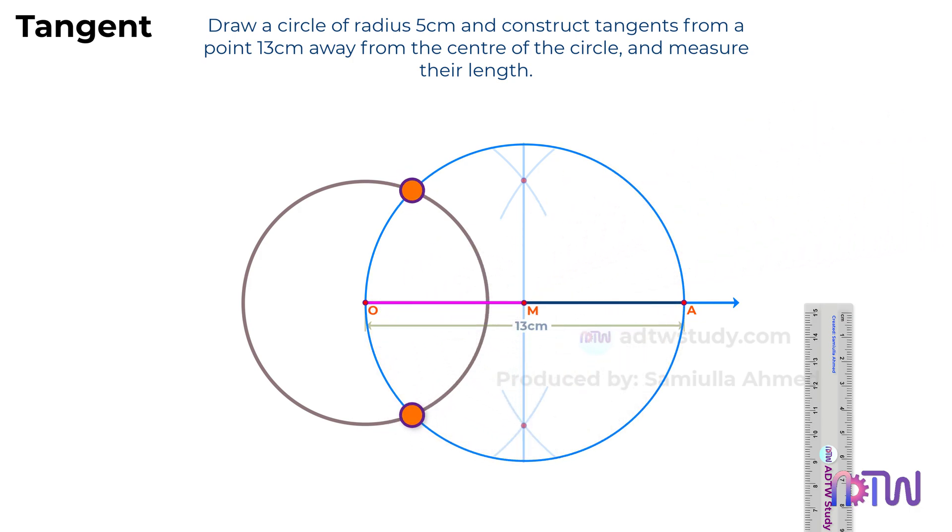The points where this new circle intersects the previous circle are the points where the tangents will touch the circle. After this, draw the lines passing through these points as shown.